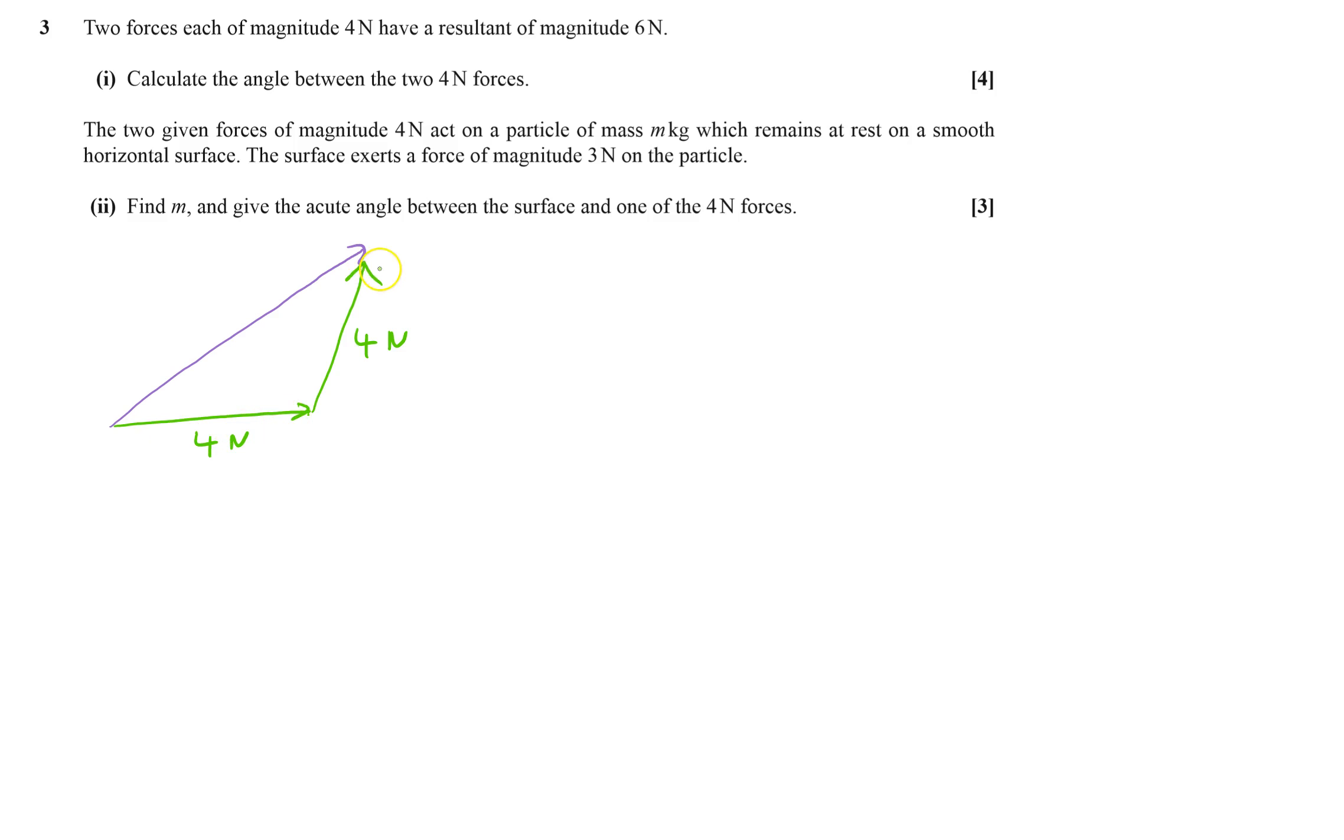Two forces, four newton forces. The resultant, so from beginning of the first arrow to the end of the second arrow, that distance is six newtons. And that gives me the thing, and then I can work out the angle between the two forces.